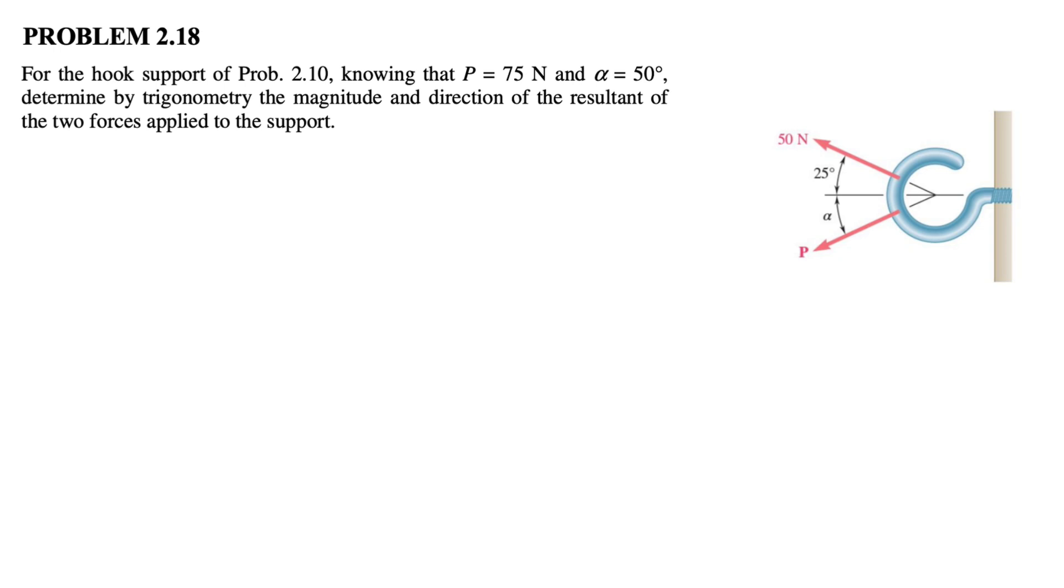In this one, we know that the force P is 75 Newton, and we have the angle alpha 50 degrees. We need to determine by trigonometry the magnitude and the direction of the resultant of these two forces applied at the support.